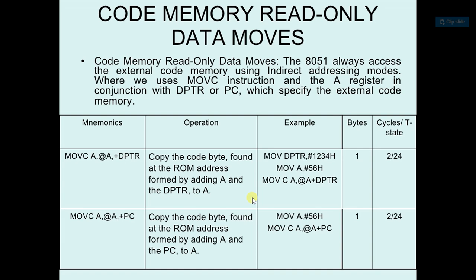This addressing mode is basically used for accessing data from a lookup table. The address of memory is indexed, meaning the address is added to form the actual address of memory. The 8051 always accesses the external code memory using indirect addressing modes, and here we use the DPTR data pointer register.